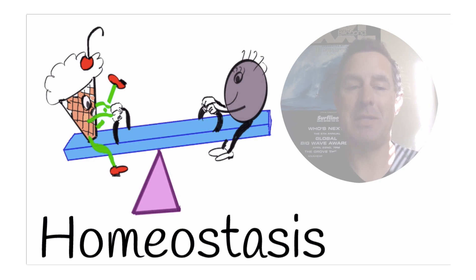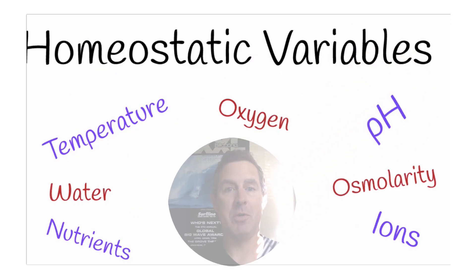Homeostasis is maintained by a process known as negative feedback. Homeostatic variables—as you can see here there's a number of these—blood pressure and heart rates are significant homeostatic variables.